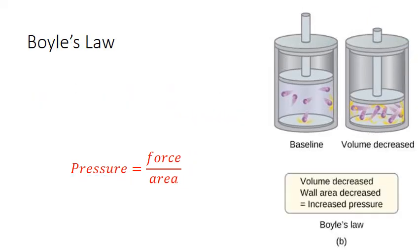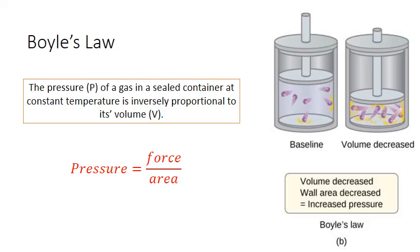Our next simple gas law is Boyle's law, and it relates pressure to volume at a fixed temperature. It states that the pressure of a gas in a sealed container at constant temperature is inversely proportional to its volume. So because temperature remains constant, the average kinetic energy and the force of the gas molecule collisions stays relatively constant. But changing volume changes the surface area of the container, so as we decrease the volume, we'll also decrease the surface area available for collisions, and this will ultimately increase the pressure.